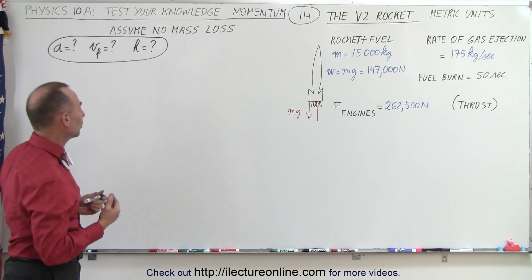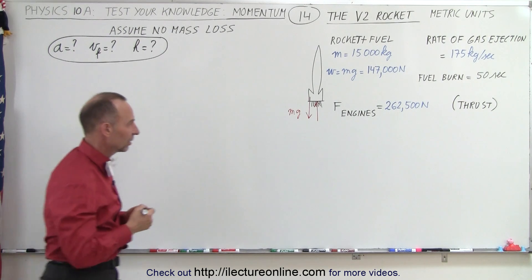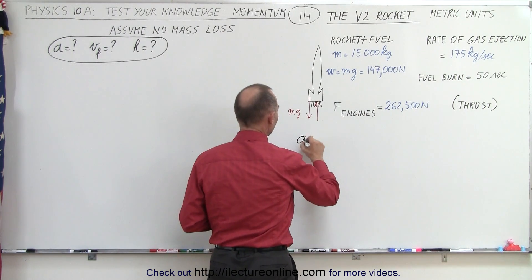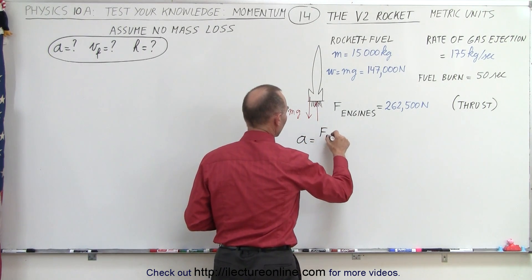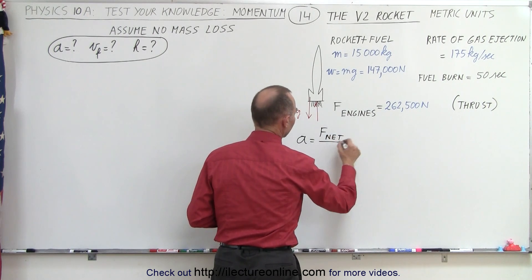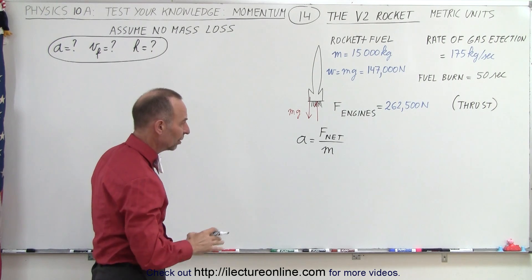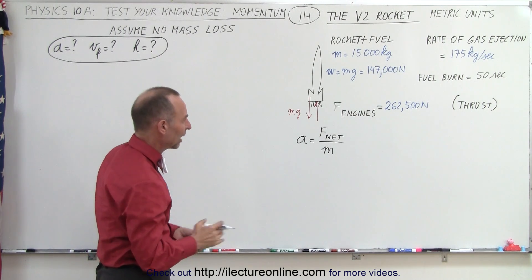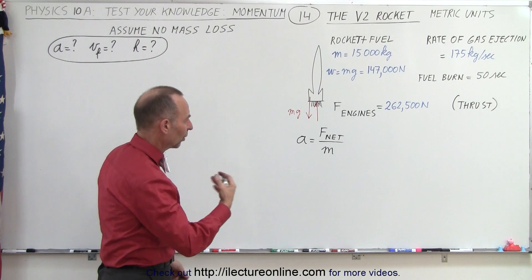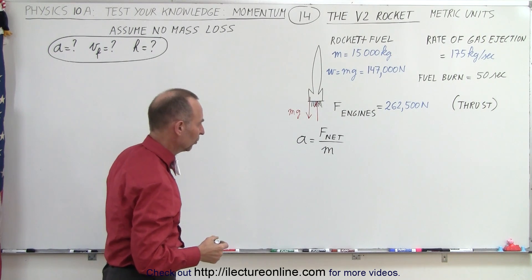So the first thing is we need to find the acceleration, and acceleration can be found by taking the net force and dividing it by the mass. Now in this case, again, the mass will be constant, doesn't change. That's, of course, the simplification of the problem, but we just want to see how this works with metric units.